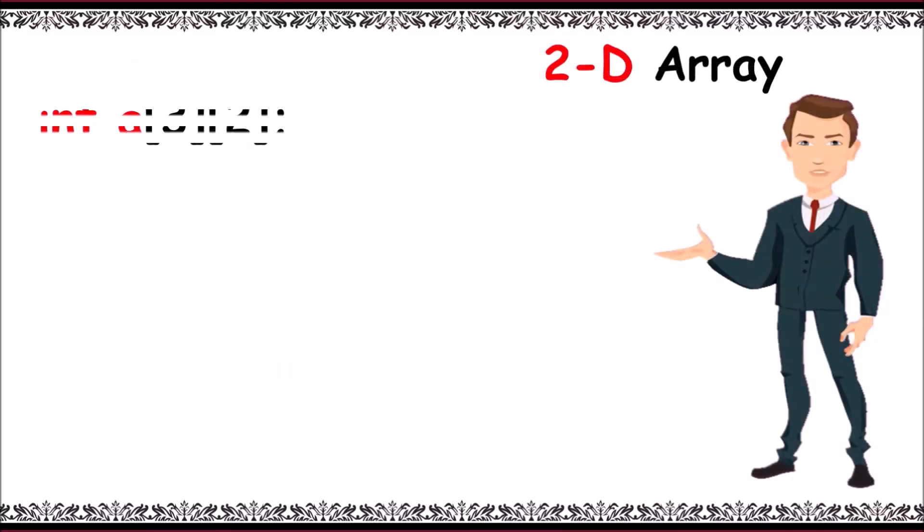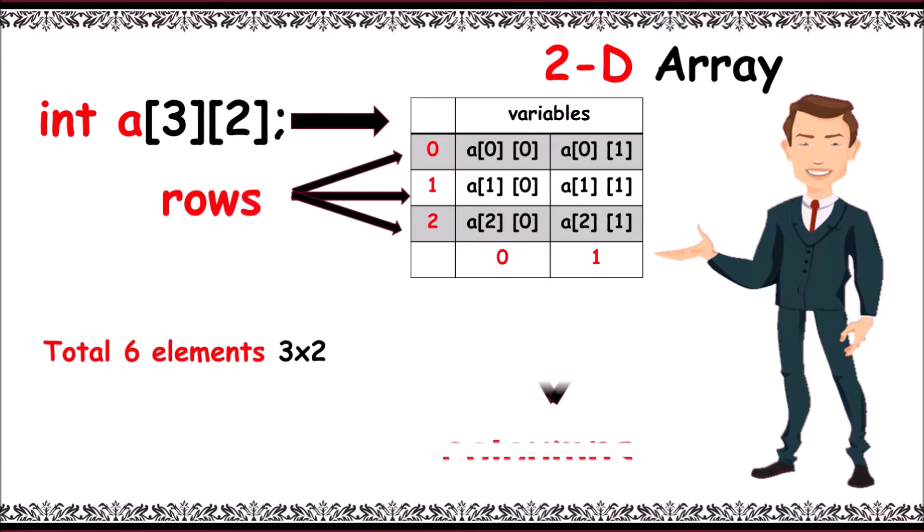Consider a 2D array int a[3][2]. It contains total 6 elements. That is, product of rows and columns, 3 into 2. The array elements be like 3 rows and 2 columns, represent a[0][0] to a[rows minus 1][column minus 1]. That is a[2][1].